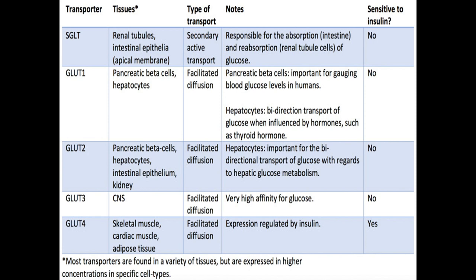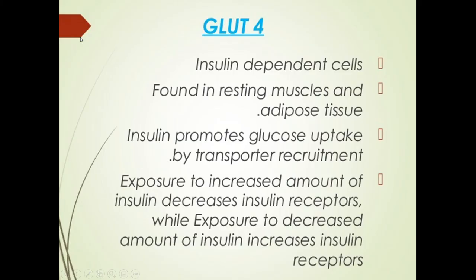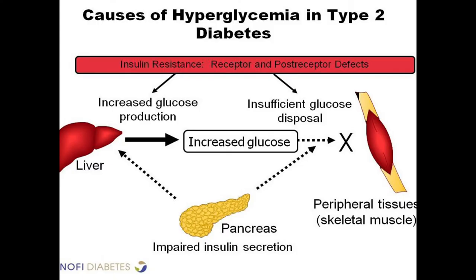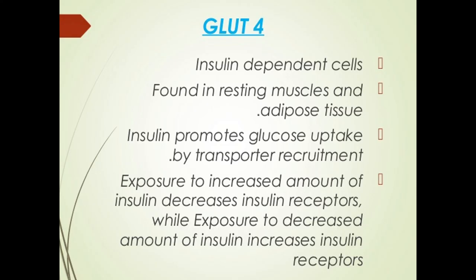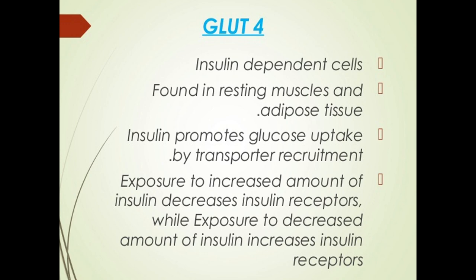In summary, the tabulated form shows: GLUT1 in RBCs and blood-brain barrier — insulin independent; GLUT2 in liver, pancreas, small intestine — insulin independent; GLUT3 in brain and sperm — insulin independent; GLUT4 in skeletal muscle, adipose tissue, and heart — insulin dependent, requiring insulin for membrane translocation. There are also sodium-glucose transporters present in the kidneys and intestine. This covers the glucose transporters and the different actions of insulin on carbohydrates, proteins, fats, and the brain. The next lecture will cover diabetes mellitus and its complications.